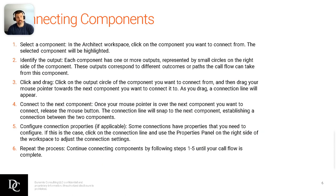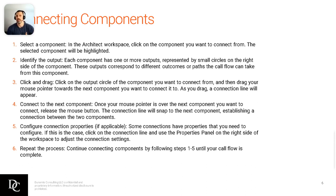So connecting those components — pretty easy. You can click and drag the component to where you want it. If you've dropped it in the wrong space, you can click and drag it to the correct space. You can also right-click on one of the arrowheads and select from there. Each component has one or more outputs represented by small circles on the right side of the component. These outputs correspond to different outcomes or paths the call flow can take. For example, play audio has an output of either text-to-speech or a prompt already uploaded into Genesys Cloud. Transferring to a number — the output is what number is needed. Same thing with transferring to a queue — you need to name what queue that is. Click and drag is a really easy way to take components from one place and drag them to the next.